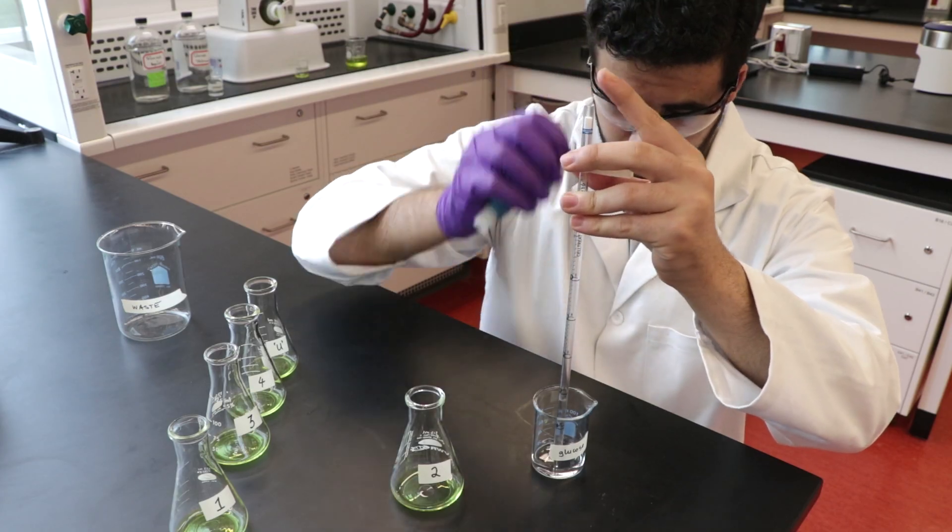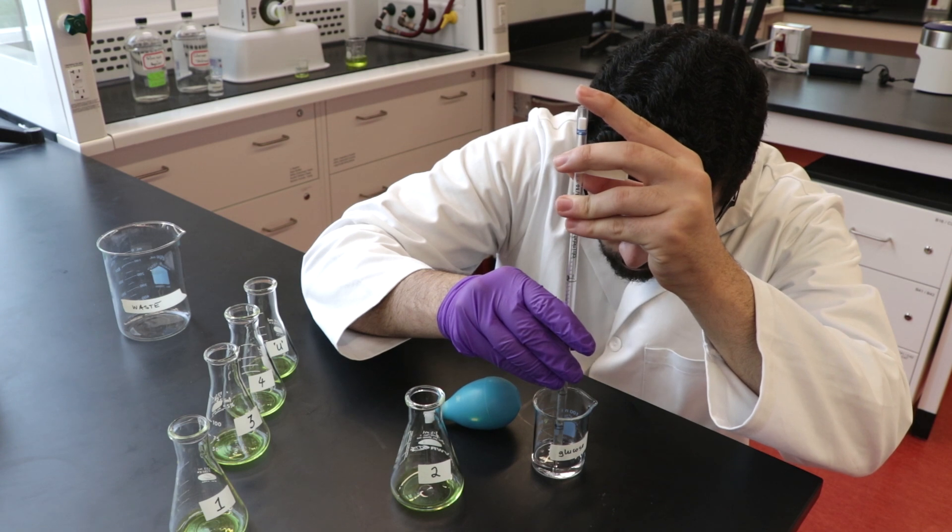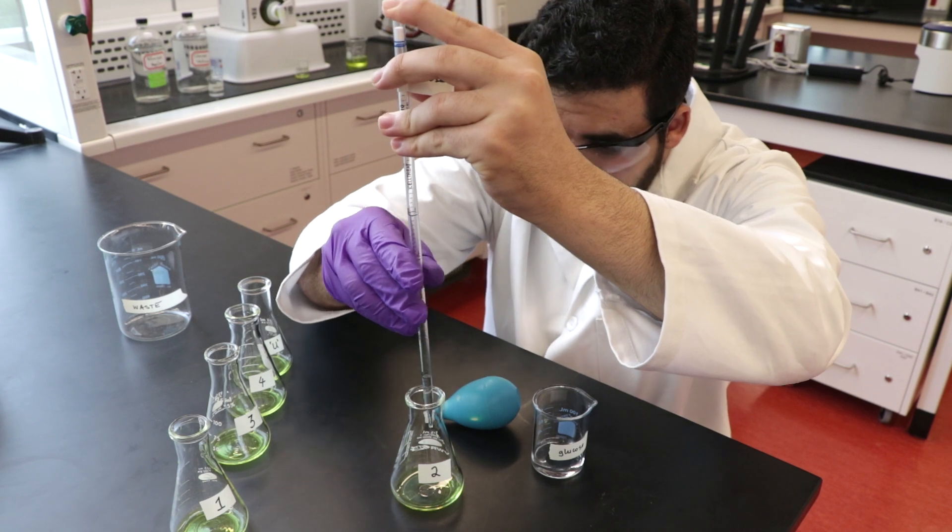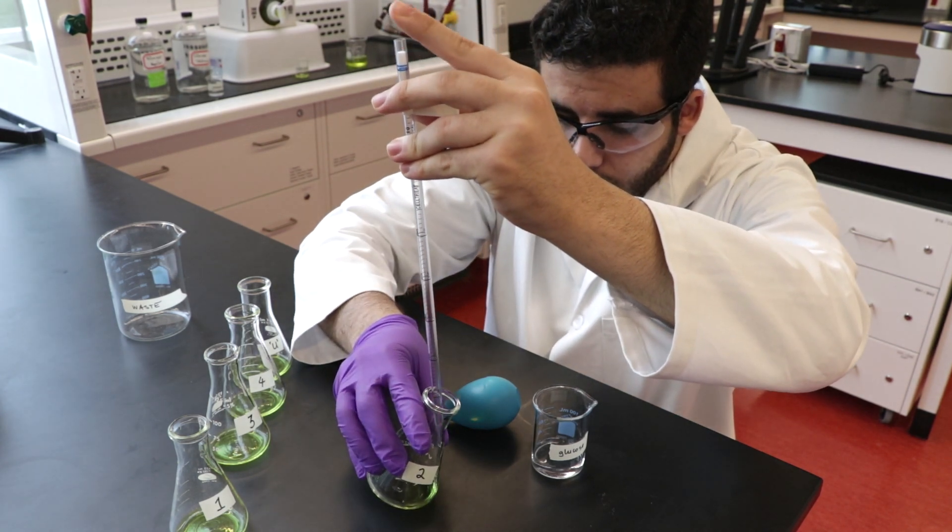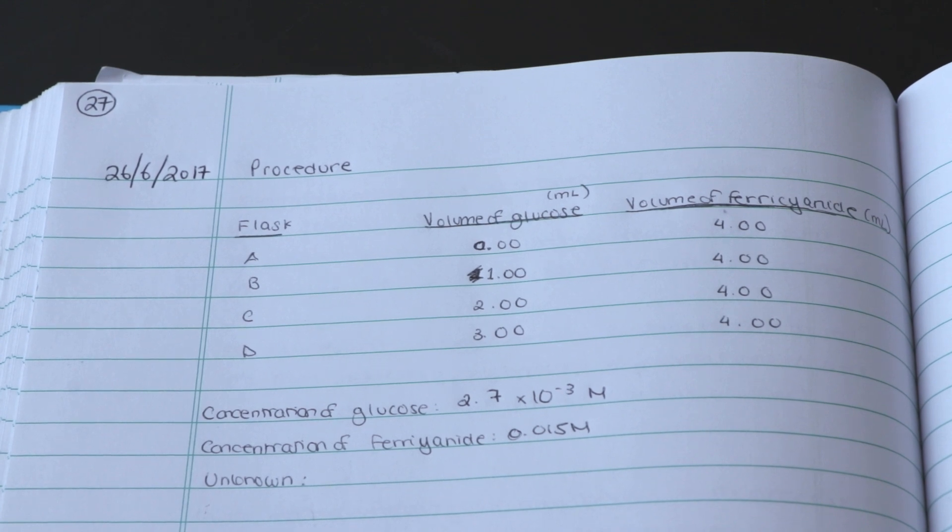Then, using a mohr pipette, transfer the appropriate volume of glucose into the Erlenmeyer flasks according to the values indicated in the lab manual. For example, 1 mL of glucose is pipetted into flask 2. It is good practice to transfer the table of values into your lab notebook.